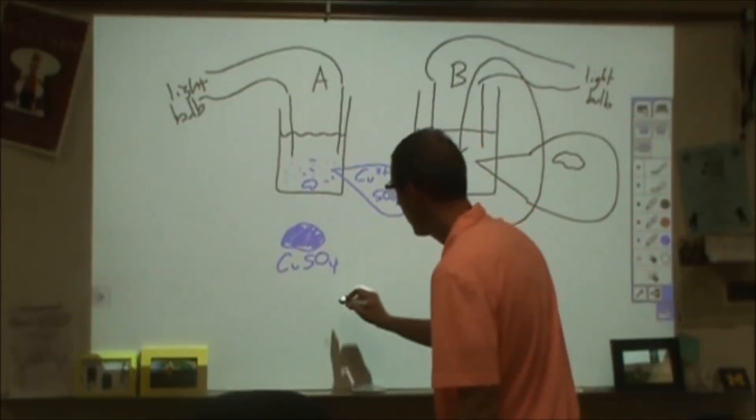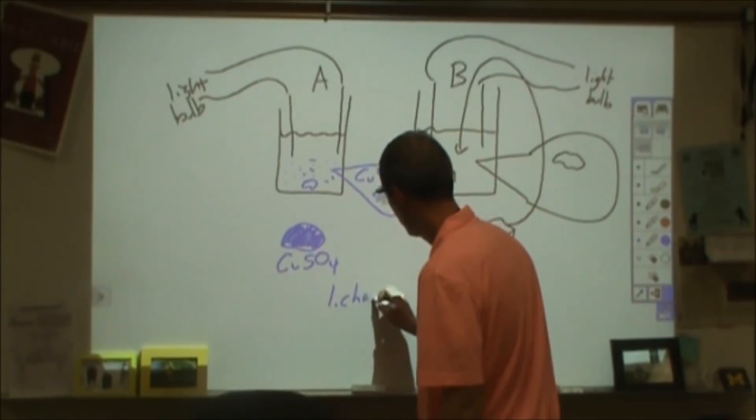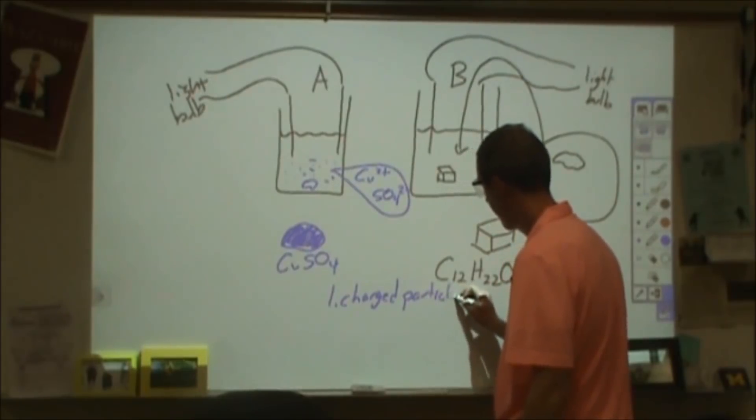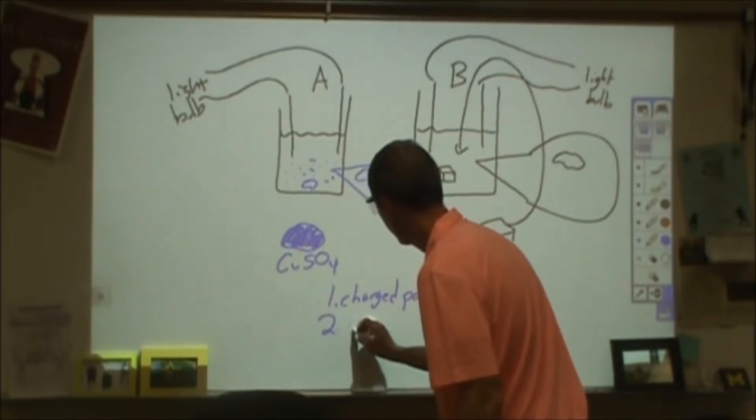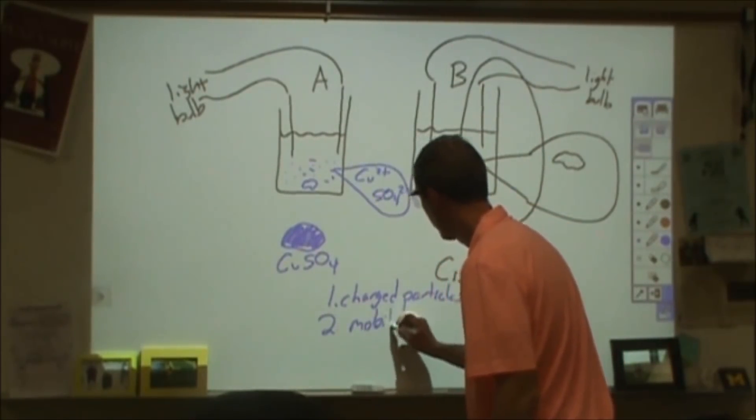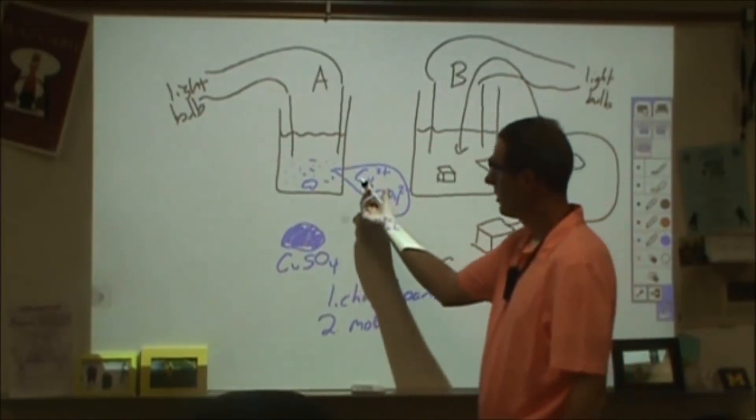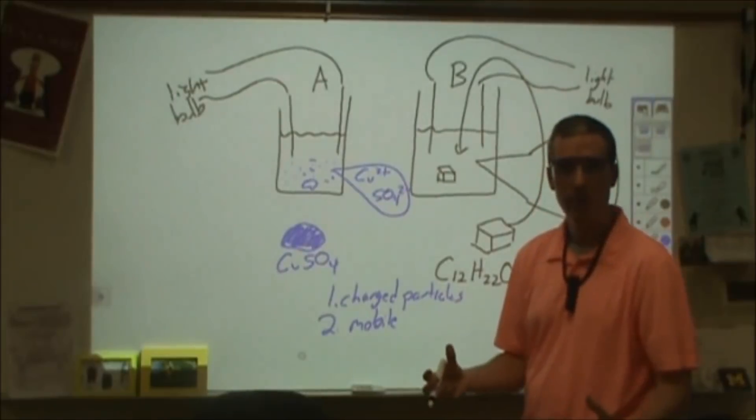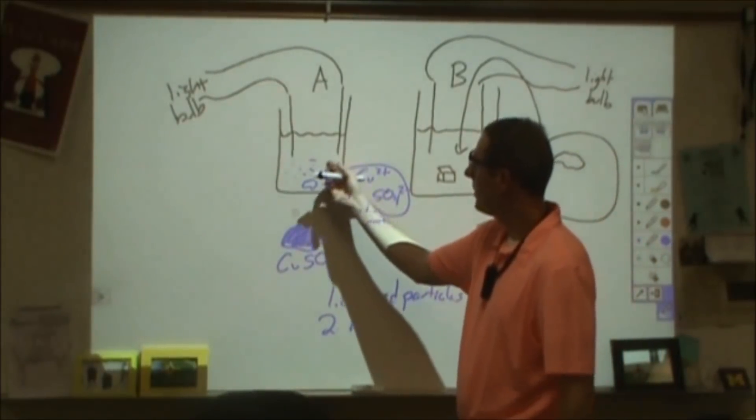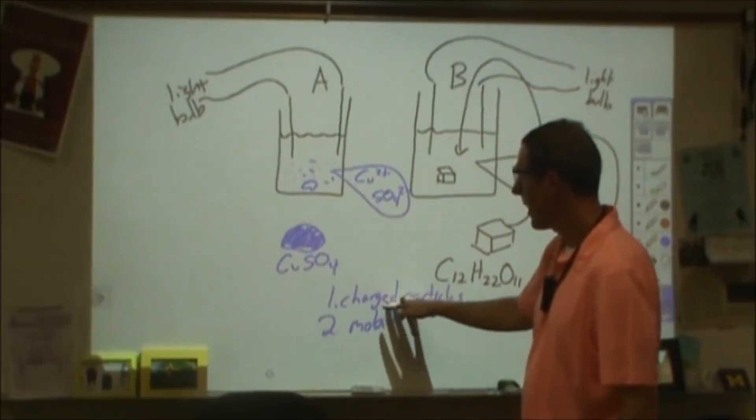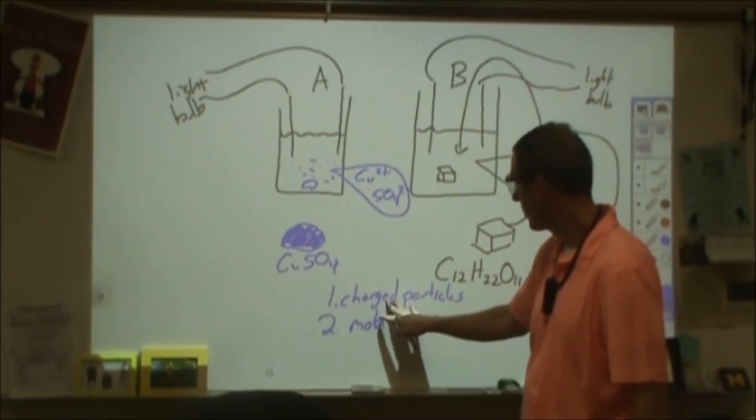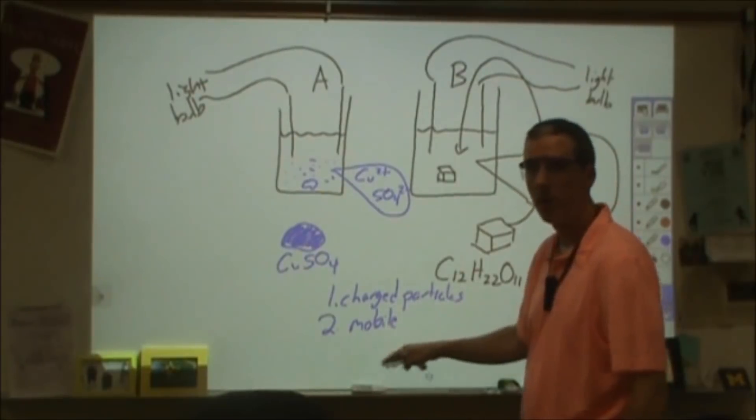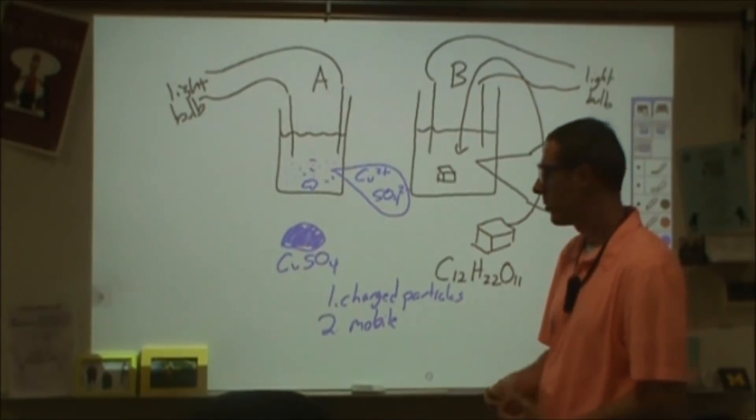In order to conduct, you're going to need charged particles, and those charged particles need to be able to move. They need to be mobile. For salts, if we have a salt that's dissolved in water, or if we have a liquid salt, if you melted a salt, then that would be able to conduct electricity. If you have a metal, which has electrons that are capable of moving within that solid structure, or a liquid metal, that would be able to conduct electricity as well.